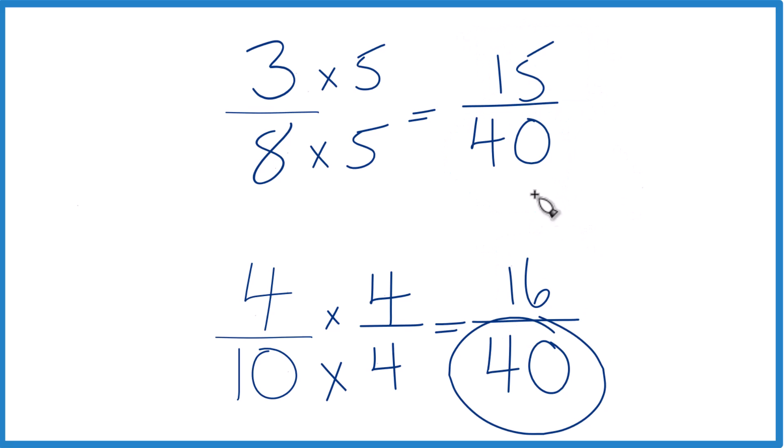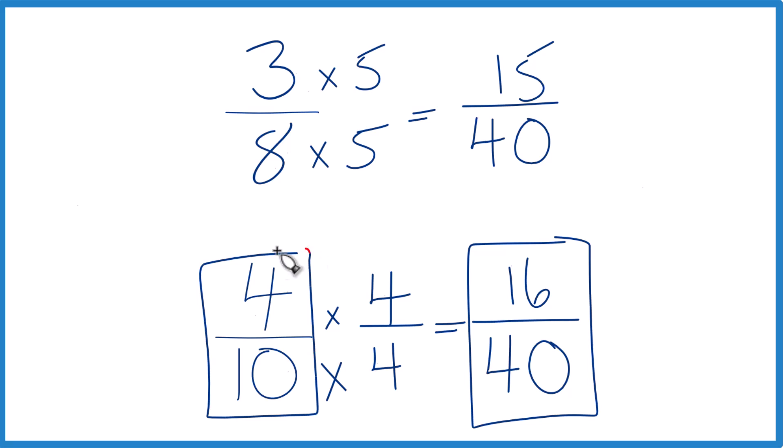And if you look at this, 16, that's greater than 15. So 16 fortieths is greater than 15 fortieths. Only by 1 fortieth, not very much, but it's still greater. That means 4 tenths is going to be greater than 3 eighths, since these are equivalent.